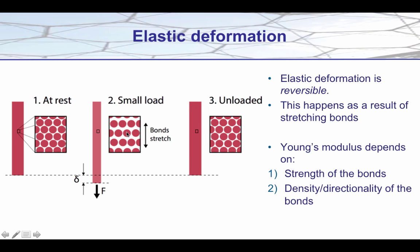So elastic deformation is fully reversible, and this is happening as a direct result of the stretching of the bonds between the atoms. Therefore, the amount of deformation that we get — in other words the Young's modulus — will depend on the strength of the bond. So if we have very weak bonds, when we apply the load it will stretch a lot. But if we have very strong types of bonds between the atoms, it won't stretch nearly as much.